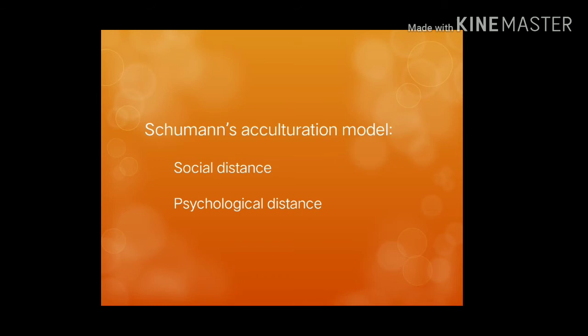The second characteristic category is psychological distance. There are four characteristics. The first is language shock — feeling silly about trying to learn the language equates to being less likely to learn. The second is culture shock — being anxious or disoriented in a culture equates to being less likely to learn. The third is motivation — the level of motivation will affect learning. The fourth is ego permeability — the extent to which second language learners view their first language as fixed and rigid will impact their learning of the second language.